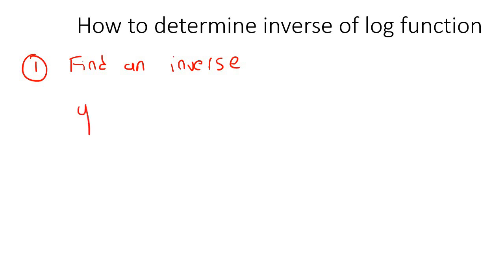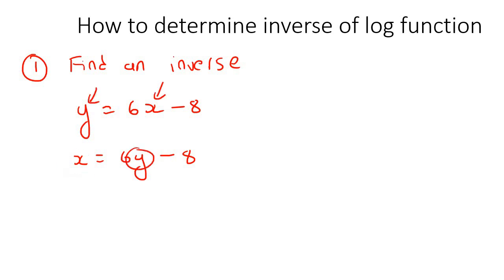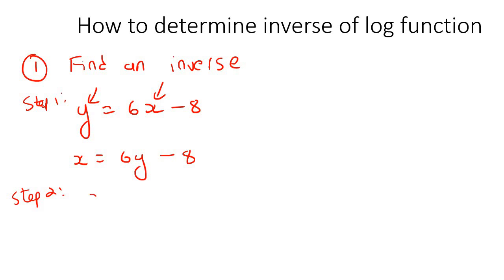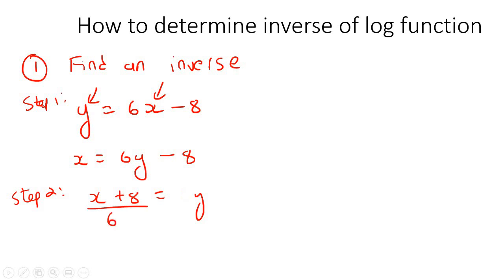I'll show you with a basic example of a straight line. Let's say we have y equals 6x minus 8. To find an inverse, step one: you first have to switch x and y around. Step two: get y alone again. So that would be x plus 8, because I took the negative 8 over. And then you divide everything by 6. So that's how you take an inverse.